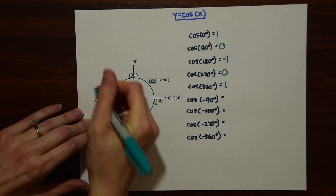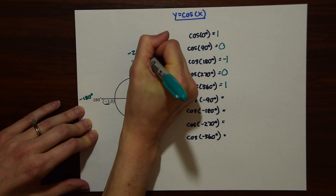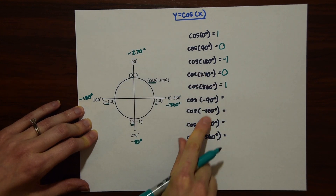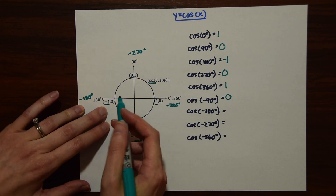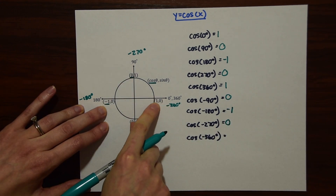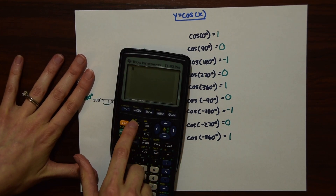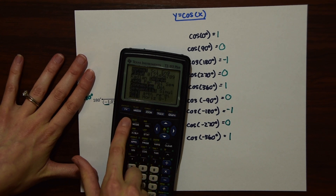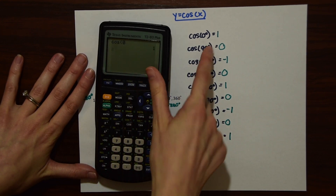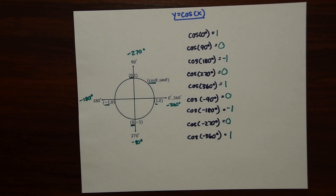Just a reminder: negative degrees travel the other way — minus 90, minus 180, minus 270, minus 360. So: cosine of minus 90 — x value is 0. Cosine of minus 180 is minus 1. Cosine of minus 270 is 0. And back at minus 360, which is 1 again. Another way to check: put your calculator in degree mode and plug in cosine of 0 is 1, cosine of 90 is 0, and so on. But this shows you the real math and where the numbers come from.